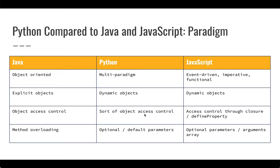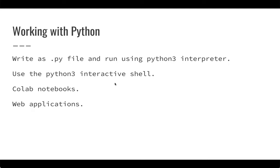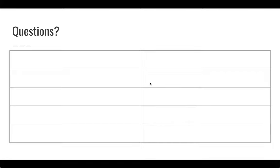With Python we have kind of aspirational access control, whereas in Java you have the private and protected keywords that allow you to protect the data inside your objects. Python doesn't allow method overloading - it uses optional or default parameters, and we'll get into that later in the semester. Working with Python, we typically write .py files and run them using a Python 3 interpreter. We can also use the Python 3 interactive shell. We're going to start off learning Python using Colab notebooks, and we can also get into web applications. If you have any questions, please add those to the discussion area. Thank you very much for watching, and we'll see you again soon.